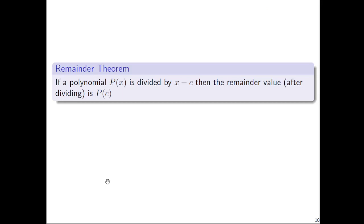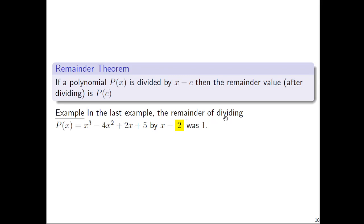The remainder theorem: if a polynomial p of x is divided by x minus c, then the remainder you'll get after dividing by x minus c is actually going to be p of c. For instance, in the last example, the remainder of dividing x cubed minus 4x squared plus 2x plus 5 by x minus 2 was 1. That same 1 is the same as when we took the same polynomial and found p of 2 and got the number 1. The fact that there's a 1 from the long division and a 1 from evaluating p of 2 — that connection is exactly what the remainder theorem is talking about.